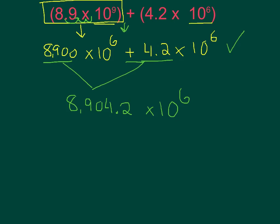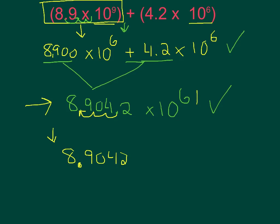Create your like terms, add — but now we have to change back to proper scientific notation. Rewriting this front number: 8.9042. I changed by one, two, three decimal places and it decreased, so my exponent has to increase by 3. So it's times 10 to the power of 9. And that right there is my final answer.